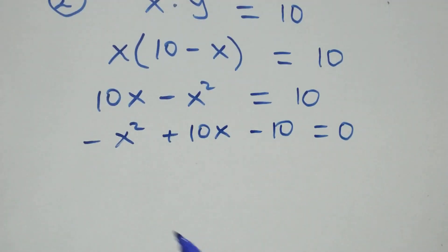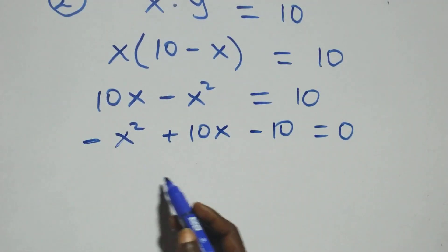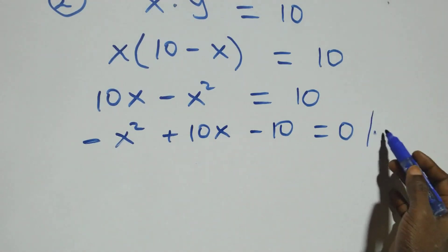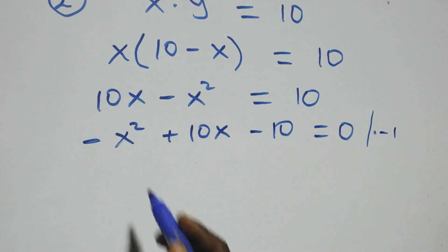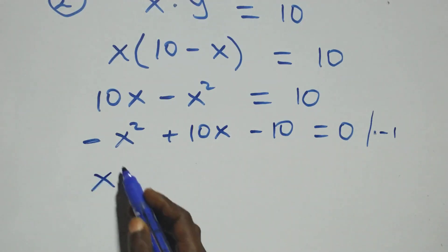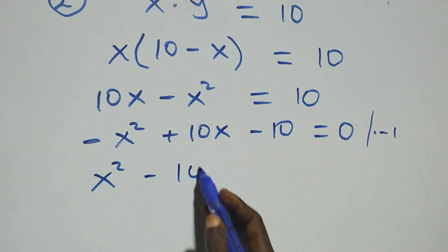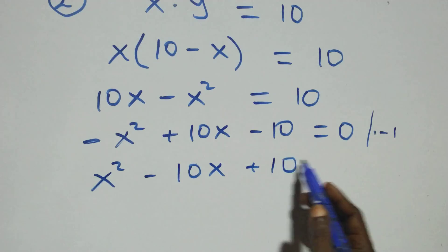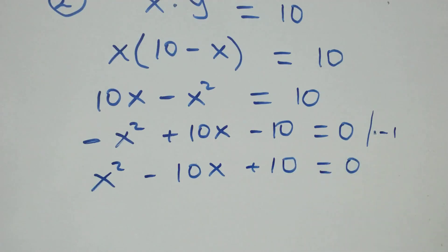Next we multiply through by minus 1 so as to remove the negative leading term. This gives us x squared minus 10x plus 10 equals 0.